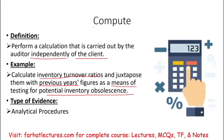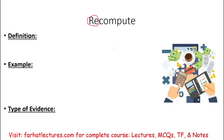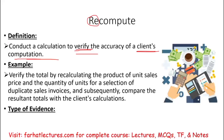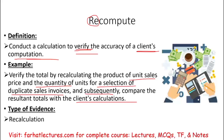Recompute is different from compute. Recompute means to perform the computation again — to conduct a calculation to verify the accuracy of the client's computation. For example, verify the total by recalculating the product unit sales and quantity for a selection of sales invoices, then compare the results to the client's calculation. The type of audit evidence is recalculation — not analytical procedures. Notice: recompute maps to recalculate. Also note that examine as a procedure is not the same as examination as a category of evidence.